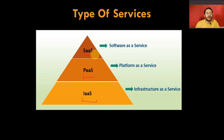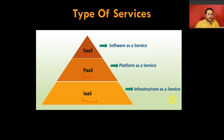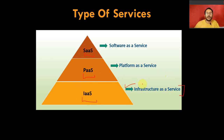You might ask why I put all three services in a pyramid-type structure. There is a very specific reason. If you understand IaaS first, you don't need to put extra effort to understand the other two services. Once you understand IaaS — its architecture and what type of service AWS provides under it — the other two become a piece of cake.